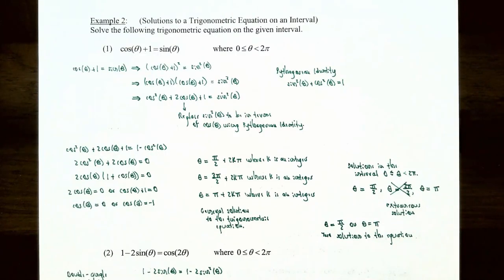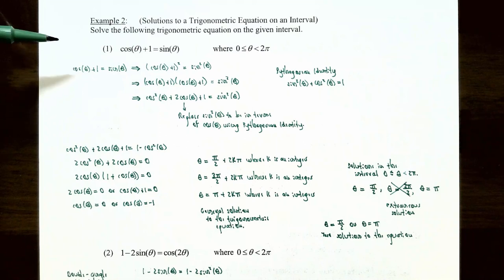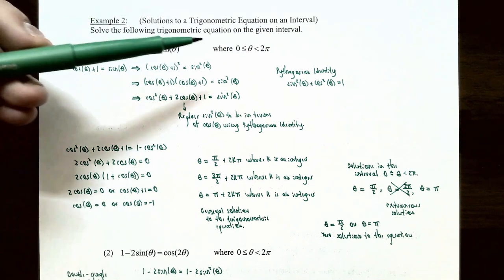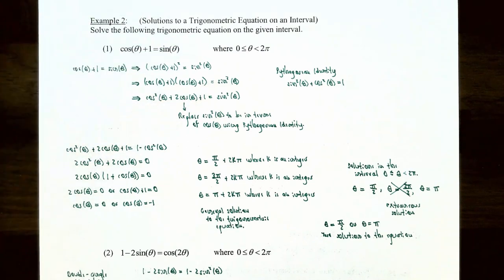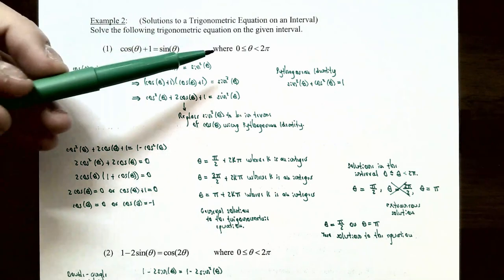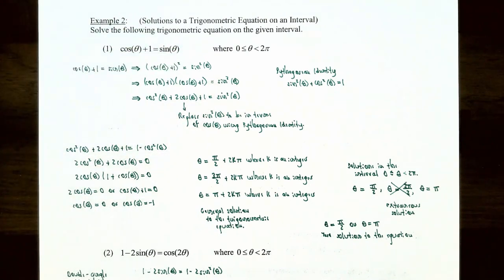So let's talk about example two: solutions to a trigonometric equation on an interval. We're going to solve the following trigonometric equations on the given interval. Number one, we're going to solve the equation cosine of theta plus one is equal to sine of theta, where theta is between zero and two pi, including theta equals zero but not including two pi.